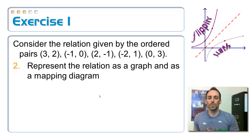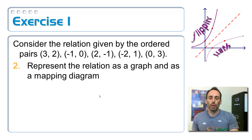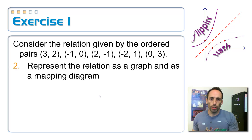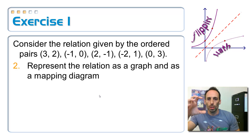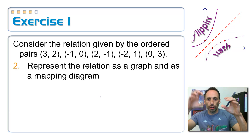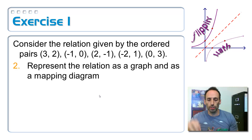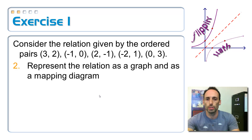Using the same set of ordered pairs, represent this as a graph and a mapping diagram. Go ahead and pause the video and try it — draw a graph and a mapping diagram with input circles on one side, output circles on the other, connected by arrows.